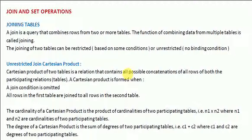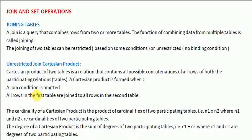A Cartesian product is formed when the join condition is omitted. All rows in the first table are joined to all rows in the second table. The cardinality of a Cartesian product is the product of the cardinalities of the two tables.